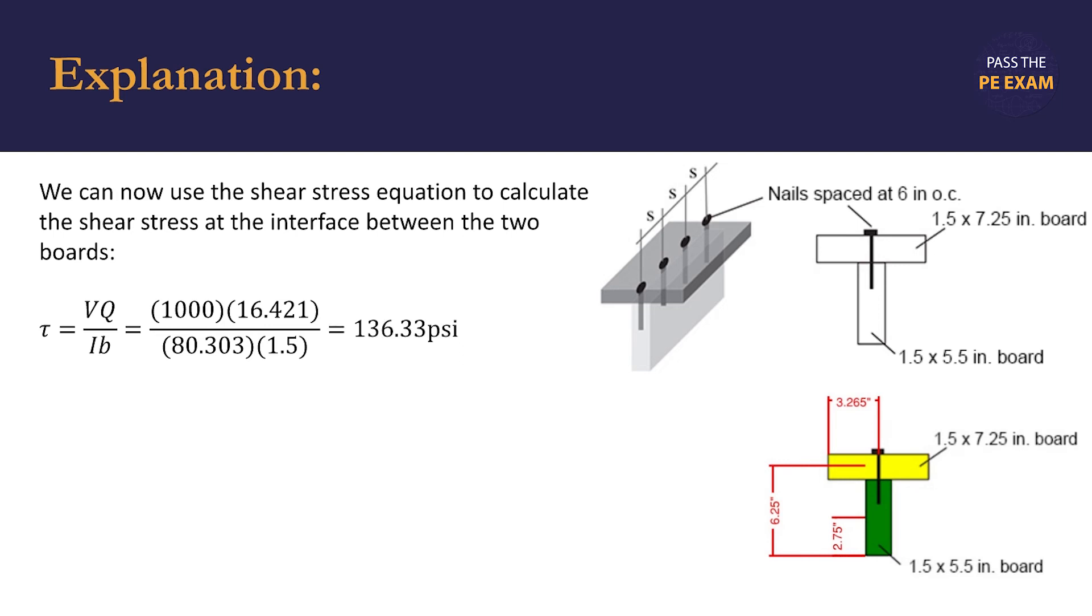Simplifying, we find that tau is 136.33 pounds per square inch, and this is the total shear stress.